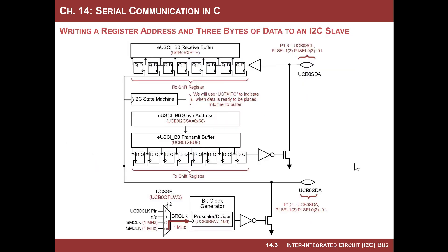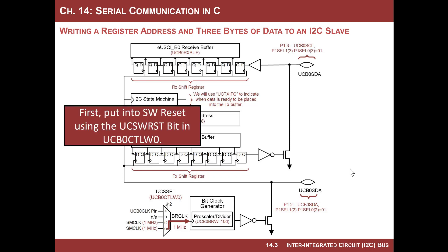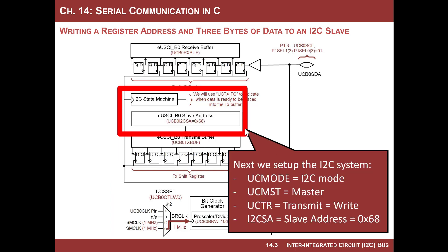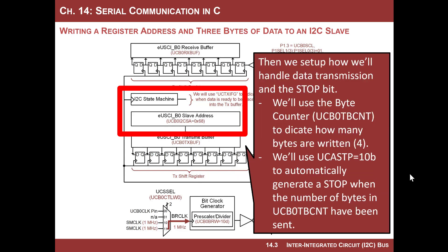Here is the block diagram of the MSP430 I2C system. Let's quickly go through what we need to configure. First, put it in software reset so we can configure it. Then set up the clock — we'll do 100 kilohertz SCK clock, choose SM clock as our bit rate clock, and divide it by 10 to get 100K. Then we need to put it in I2C mode, master mode, transmit/write mode, and set the slave address register to 68, which is our real-time clock.